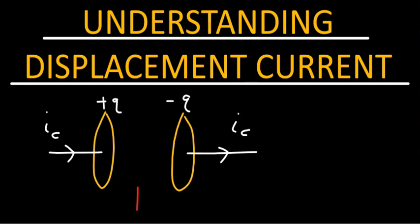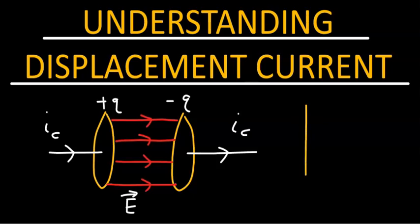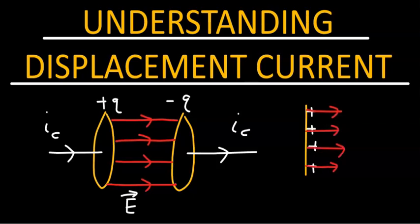Let's concentrate in the region between the plates. Since the plates carry charges of opposite sign, there must be electric fields in the region between these plates, going from the left to the right. Let's call this electric field E. Let's apply Gauss's law to the left-hand side plate. Assume this is the cross-sectional area of the left-hand side plate, and you have positive charges on its surface, and the electric field is going like that. The magnitude of the charge is Q coulombs at that instant.